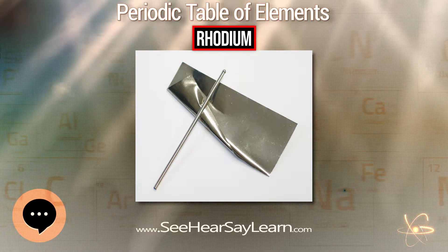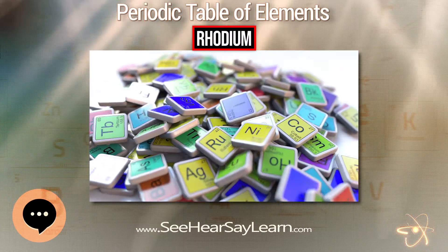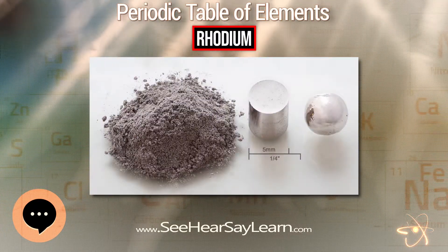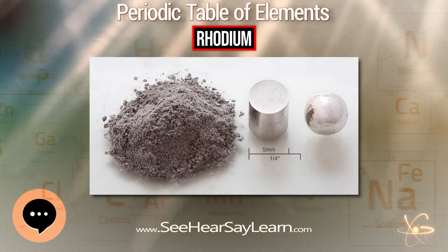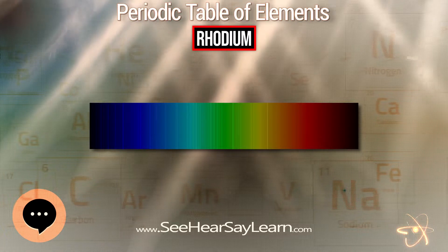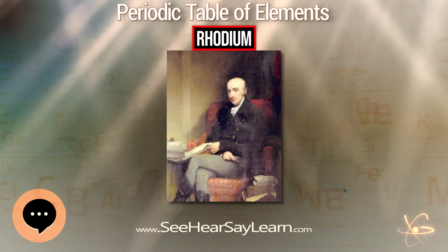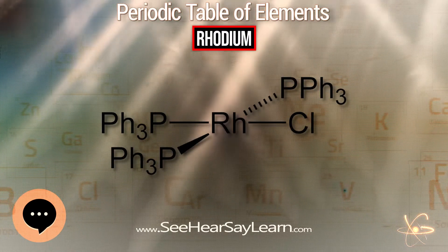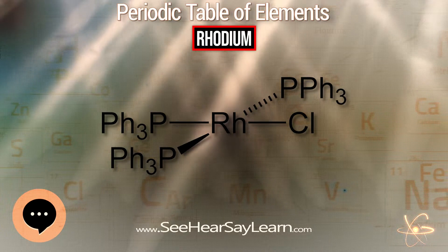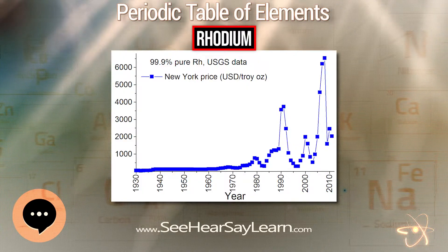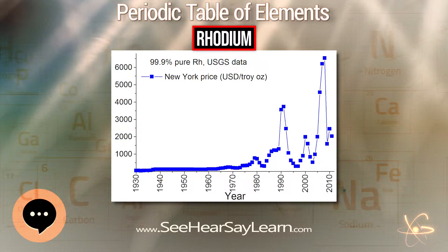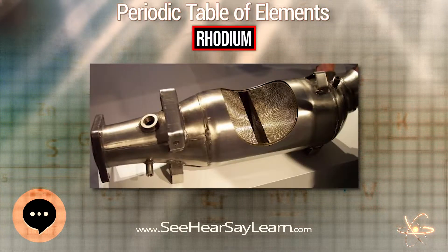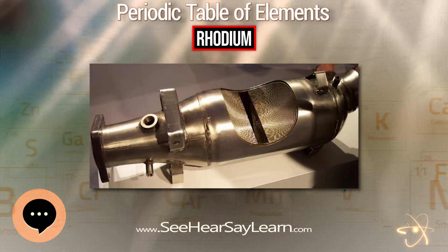Twenty other radioisotopes have been characterized with atomic weights ranging from 92.926 u to 116.925 u. Most of these have half-lives shorter than an hour, except 100Rh and 105Rh. Rhodium has numerous meta states, the most stable being 102mRh with a half-life of about 2.9 years and 101mRh with a half-life of 4.34 days. In isotopes weighing less than 103, the primary decay mode is electron capture and the primary decay product is ruthenium. In isotopes greater than 103, the primary decay mode is beta emission and the primary product is palladium.